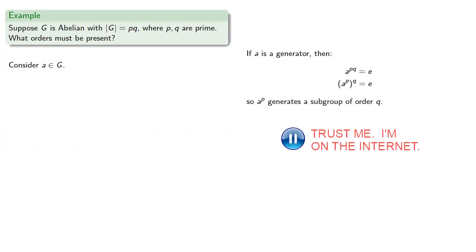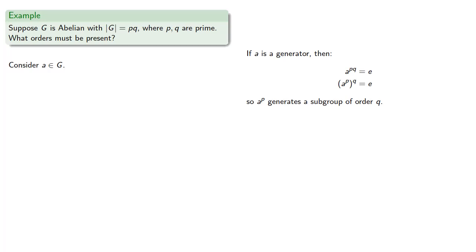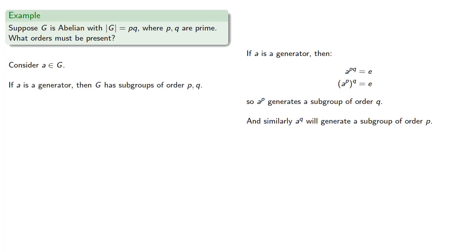Or does it? You should prove that this is actually the case. Now similarly, a to the power q will generate a subgroup of order p. So what this means is that if a is a generator, then G has subgroups of order p and q.